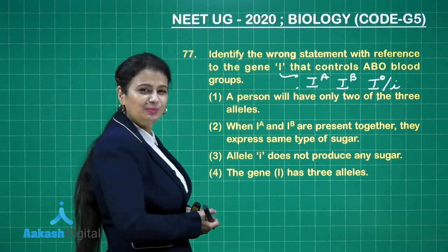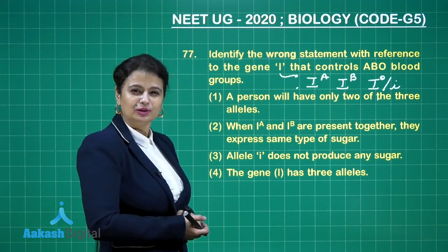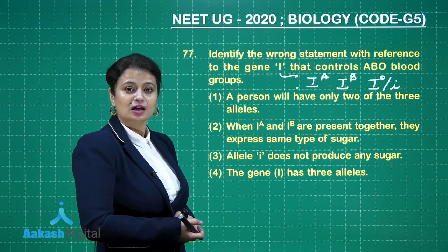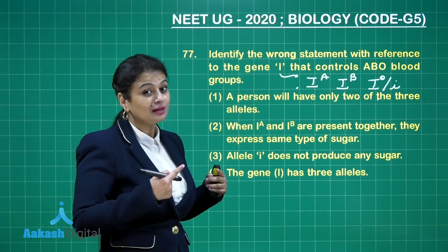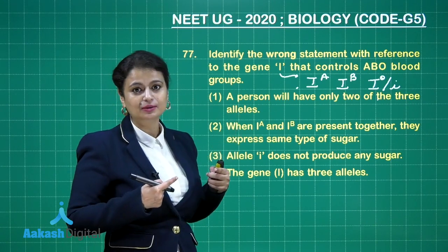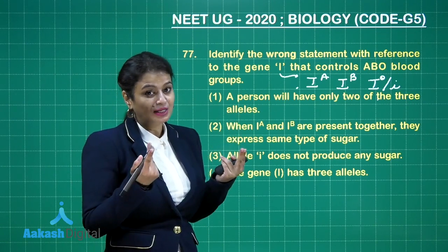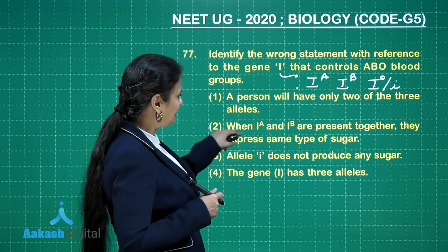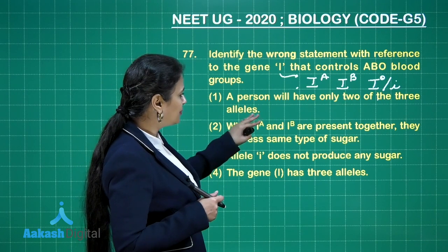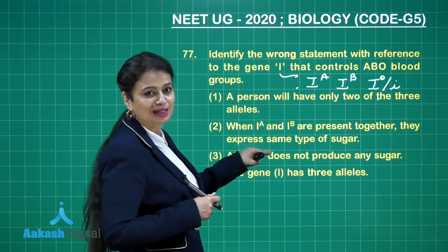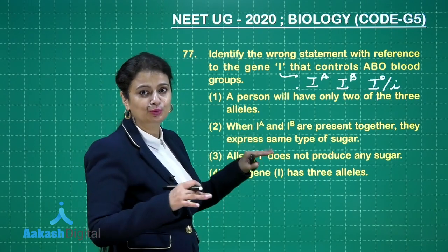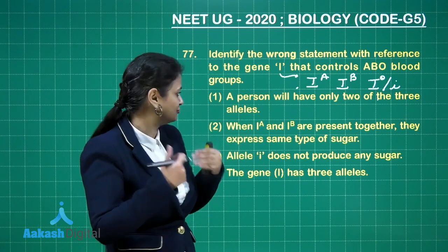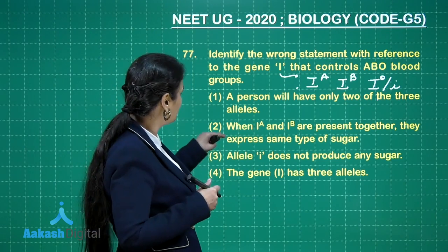A person carries only two alleles out of three — one from the mother and one from the father. The statement that when Iᴬ and Iᴮ are present together they express the same type of sugar is WRONG — they actually form different sugars. So that is the incorrect statement to identify.